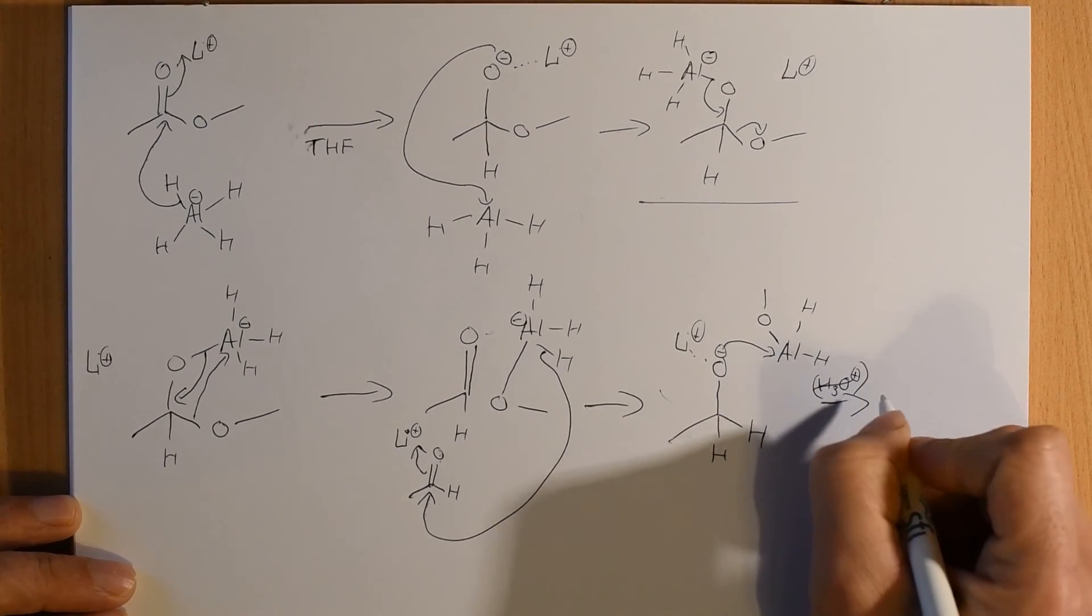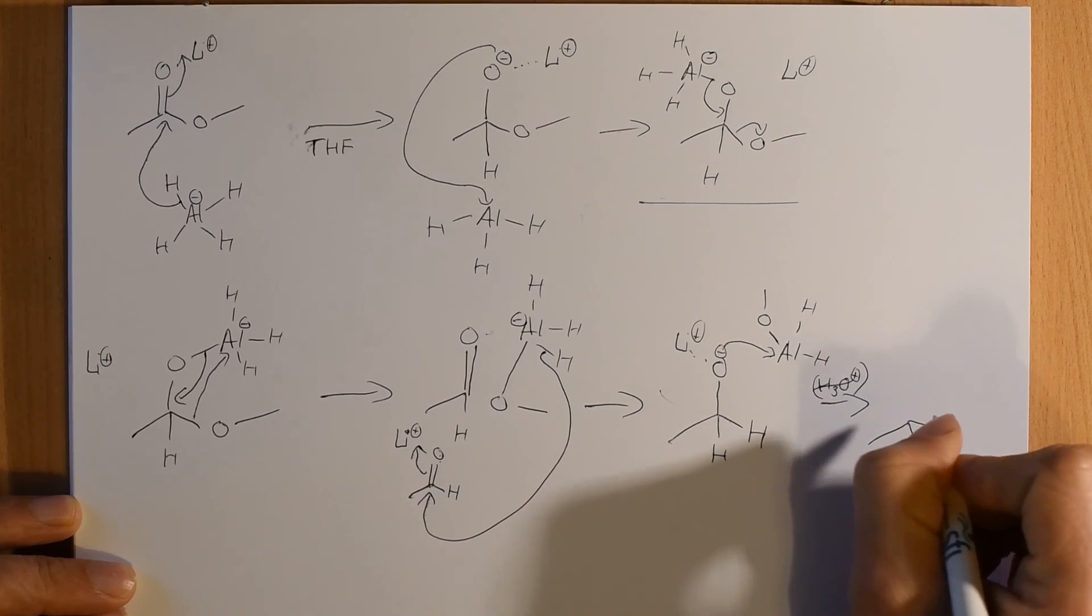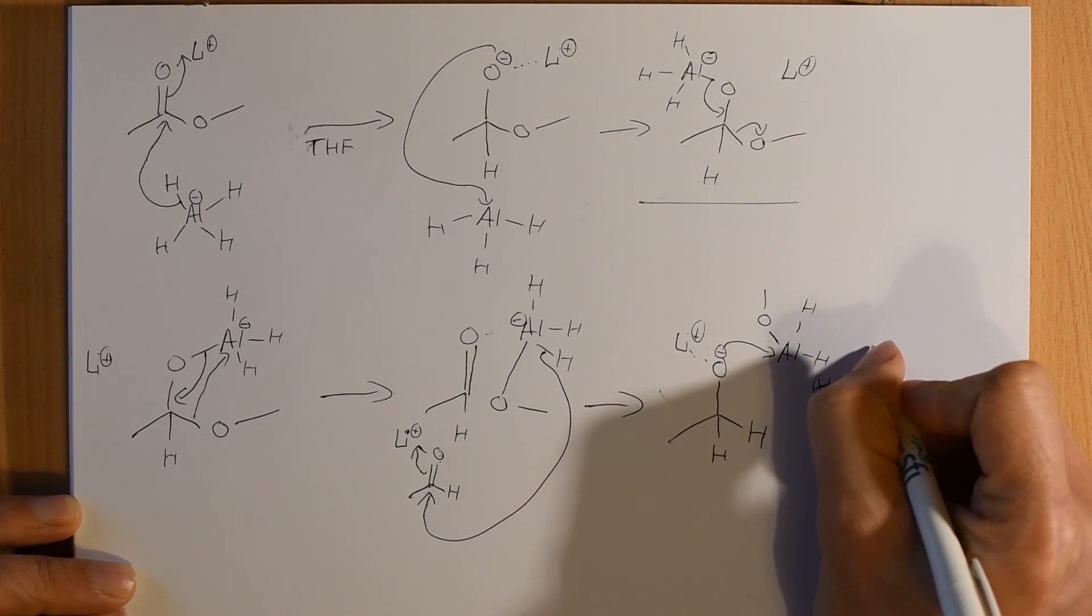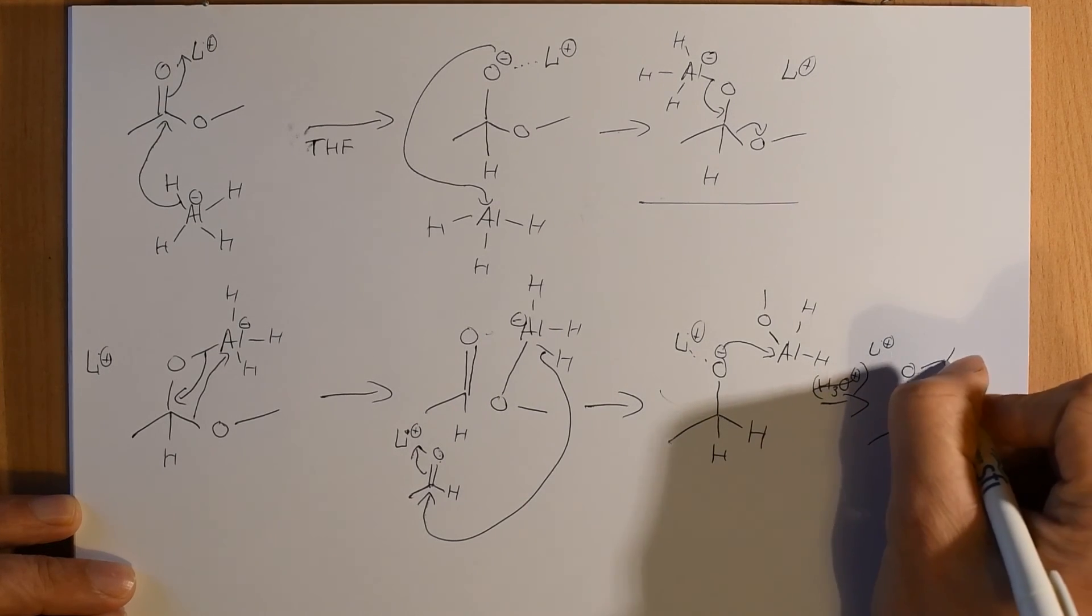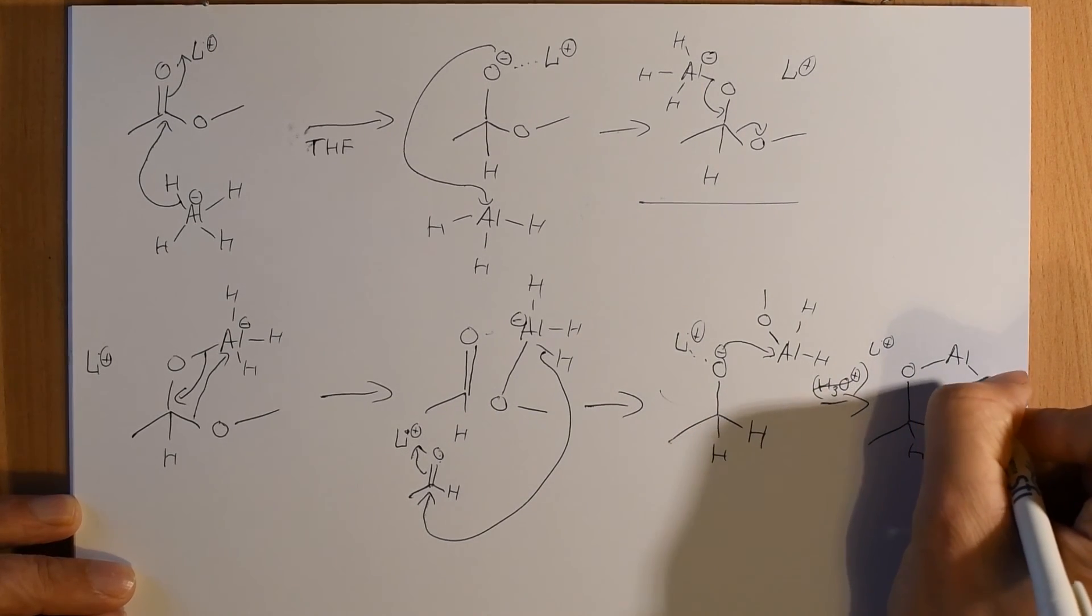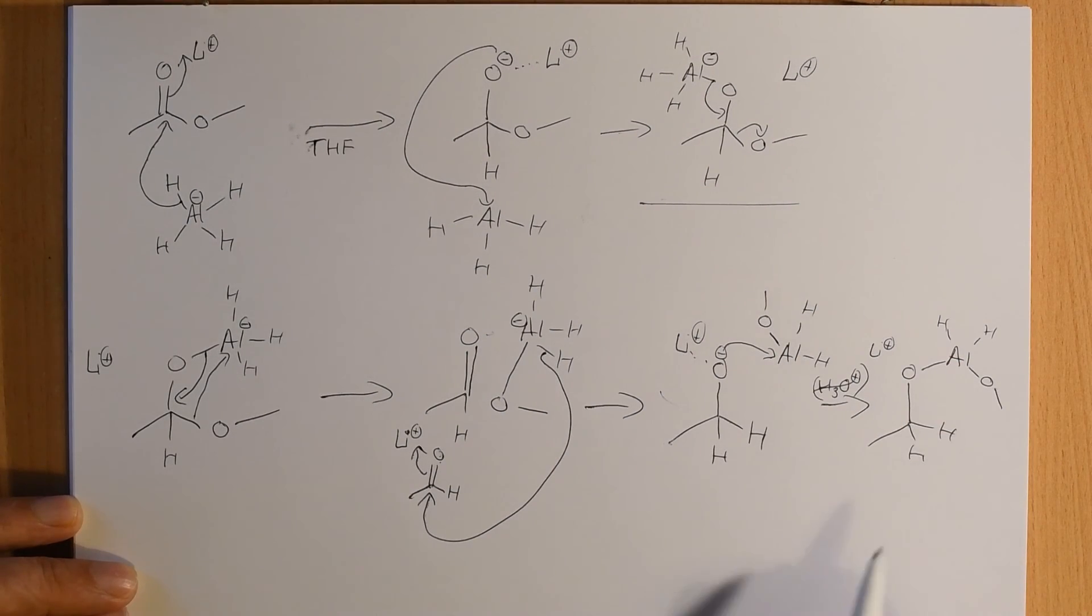So before we go adding in the acid just to drive the final structure before acidic workup so you have lithium as a spectator ion and you have your aluminum bound to your oxygen.